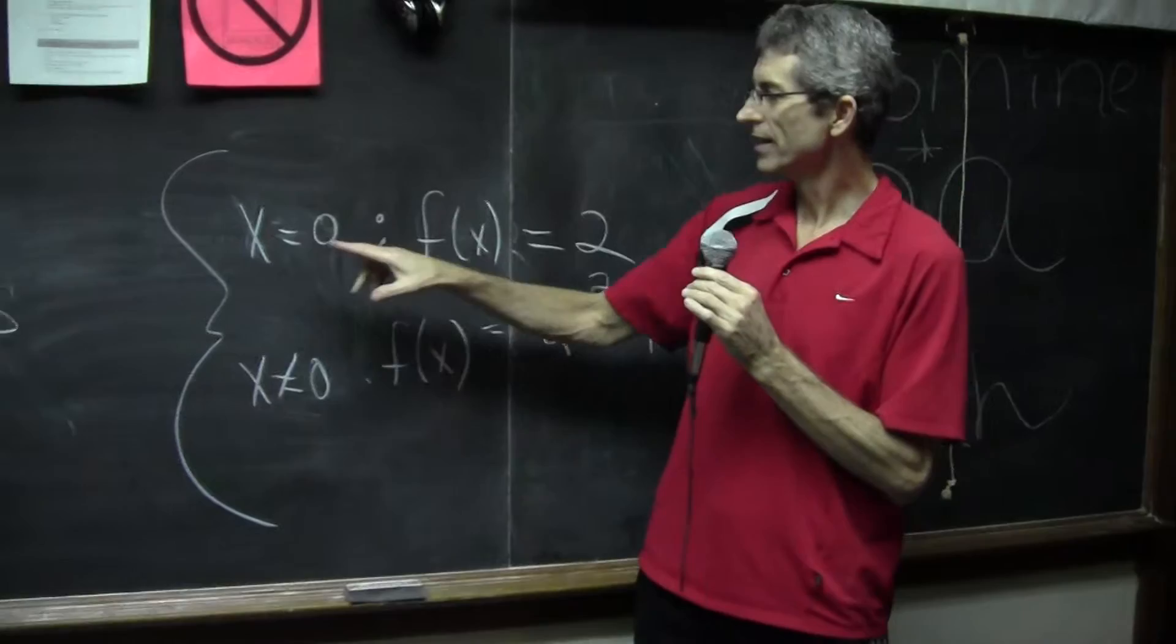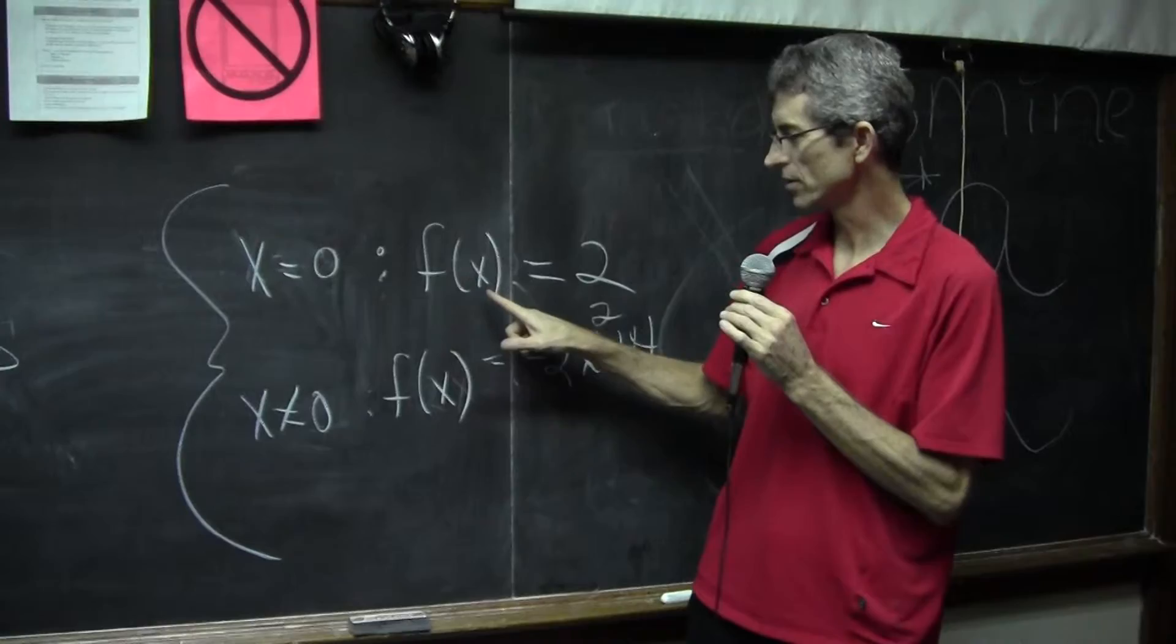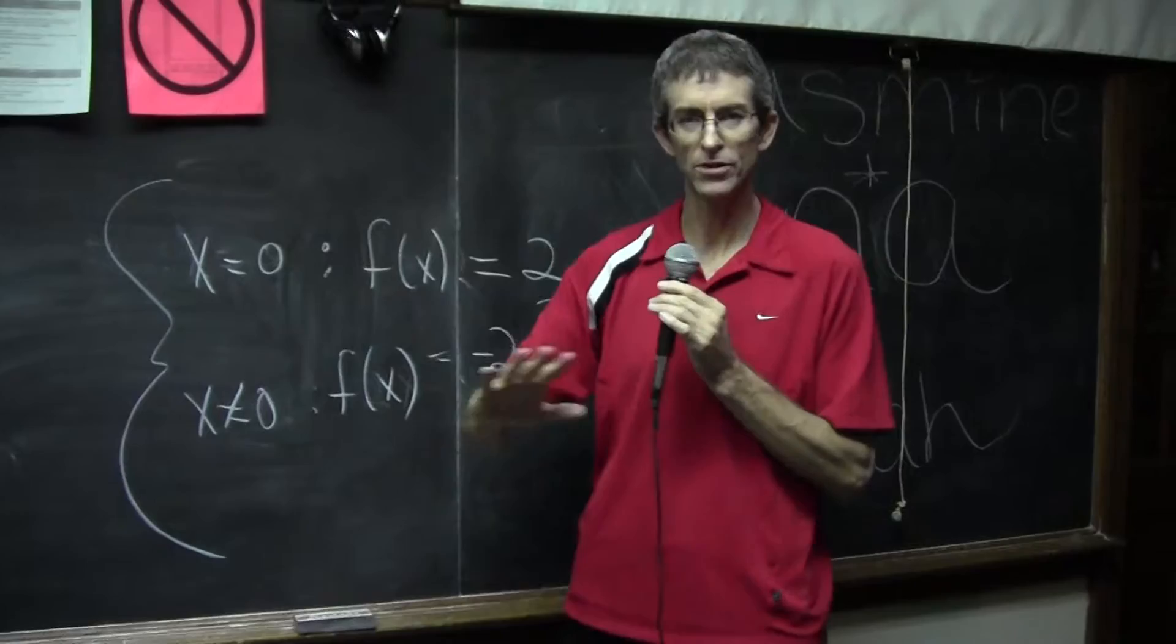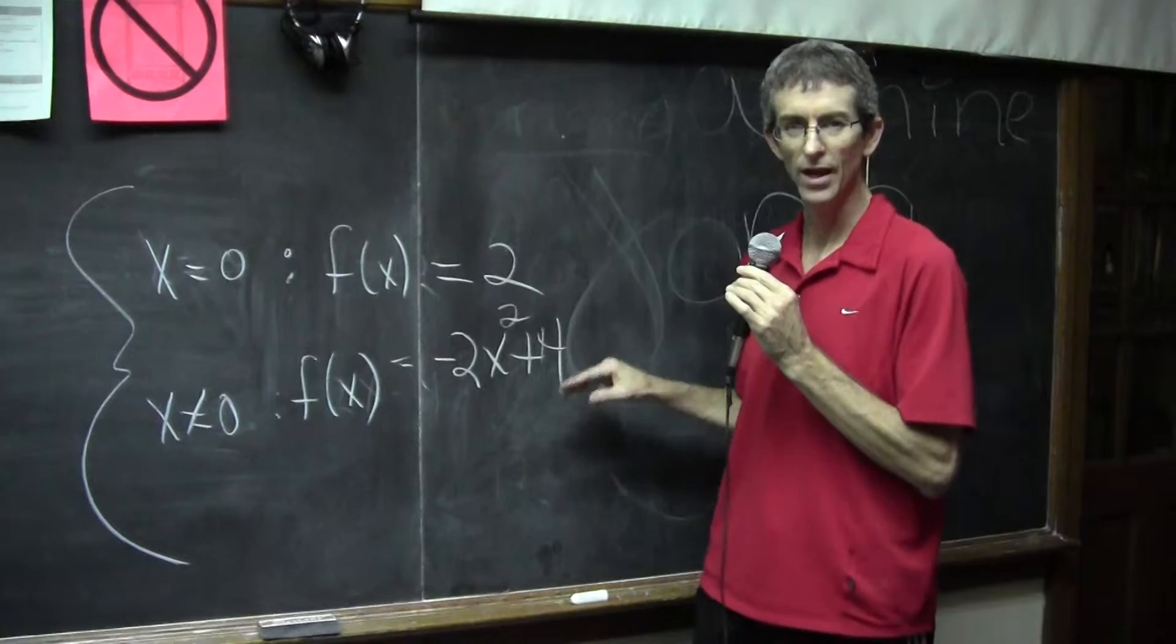Which is nice because it reminds you that functions are not always equations. The domain can be anything you want, but when x=0, the function f(x)=2. When x≠0, so all other numbers, the function is f(x)=-2x²+4. Khan creates a lot of questions similar to this pattern.